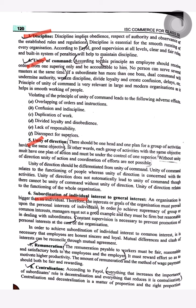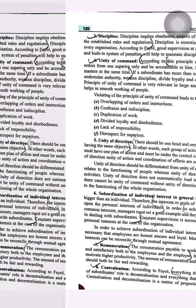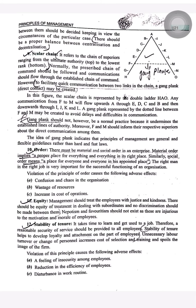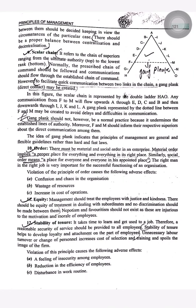Seventh, Remuneration: there should be proper and fair remuneration for the workers. Eighth, Centralization: things which can be centralized should be centralized so that there is no undue interference. Ninth, Scalar Chain: this chain should be there so that employees can work properly and achieve success.